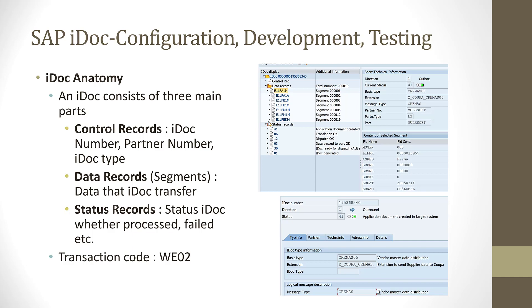Data records is actually the data that this IDOC contains and is sending or receiving. Finally, the last part is the status record. The status record basically shows what is the status of the IDOC. When you receive the IDOC, is it successfully processed? Is the information in the IDOC posted into SAP? Or has it failed? So if it has failed, there is an error message. If it is posted successfully, there is a success message. Or there could be an in-between state, showing in process.